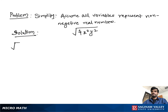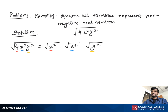Simplify square root of 4x² y². We can write this as square root of 2² times square root of x² times square root of y². If we multiply 2² times x² times y², we get back the square root of 4x² y².